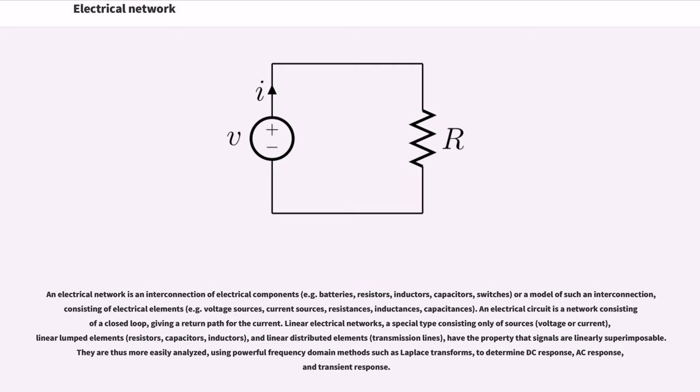An electrical network is an interconnection of electrical components, for example batteries, resistors, inductors, capacitors, switches, or a model of such an interconnection.